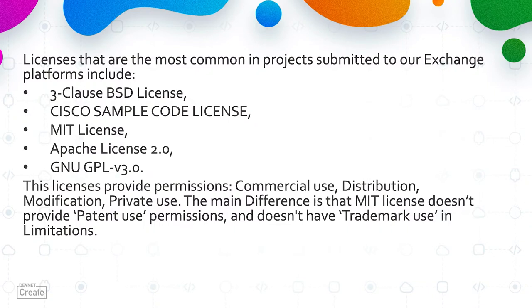You can use all projects found in Automation and Code Exchange in your organization, and also modify them — this is connected to the license. The most common licenses in projects submitted to our exchange platforms include 3-Clause BSD, Cisco Sample Code License, MIT License, Apache License, and GPL License. These licenses provide permission for commercial use, distribution, modification, and private use. The main difference is that the MIT license does not provide patent use permission and does not have trademark usage limitations.